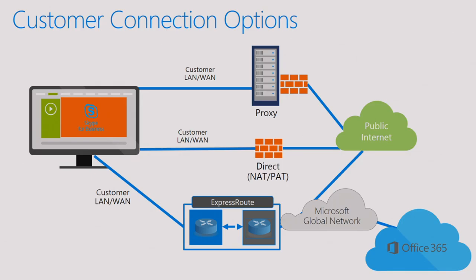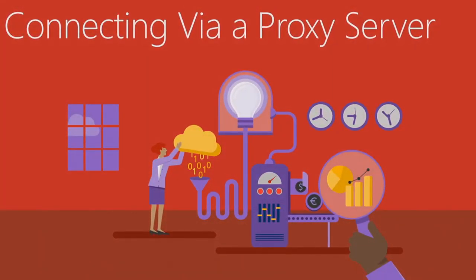If you've got a proxy, the client makes a connection to the proxy which then makes another connection out to Office 365 via the public internet. If you have a direct connection, a device at the edge of the network flips the IP address to a publicly routable one and sends it on its way. Both of those are going over the public internet, but only to the point where that ISP meets Microsoft's global network — it's not going end-to-end on ISP-managed networks. Express Route is essentially just a routing override of that internet route, terminating in the same point as your ISP.